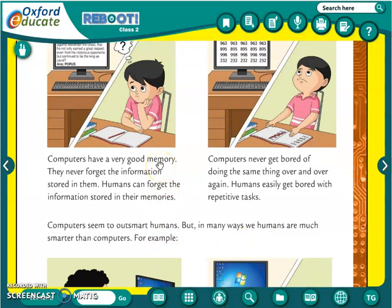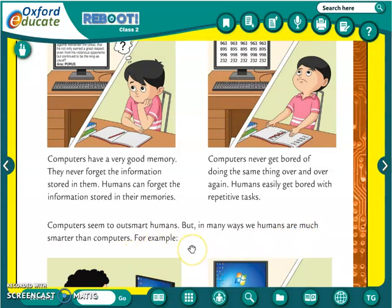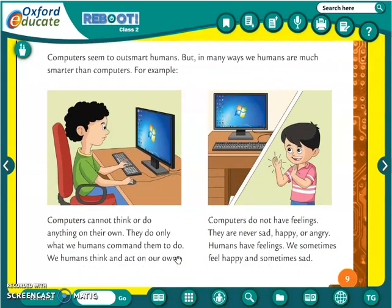So these are the advantages and characteristics about computers that we have learned. Now, computers seem to outsmart humans, but in many ways we humans are much smarter than computers. First: computers cannot think or do anything on their own — they do only what we humans command them to do. We humans think and act on our own.